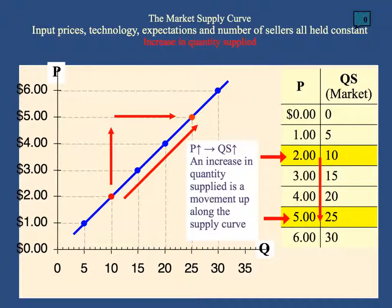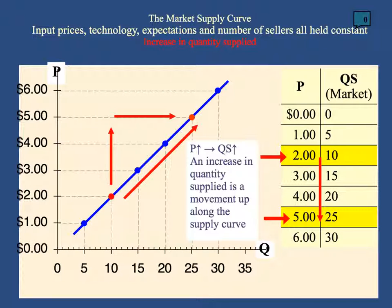The supply curve is just a graphic representation of the supply schedule. It reflects the law of supply, which states that when prices go up, the quantity supplied goes up as well — because firms want to increase revenue, and they can do so by supplying more at higher prices. If the price changes from $2 to $5, that causes a movement along the supply curve — it's just a change in a point on the supply schedule. So when it goes from $2 to $5, it goes from 10 units to 25 units, reflecting the law of supply. That is why the supply curve has a positive relationship between price and quantity.